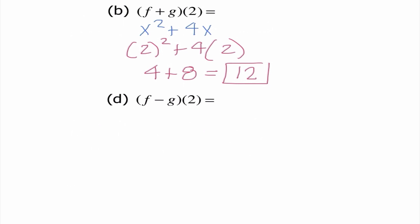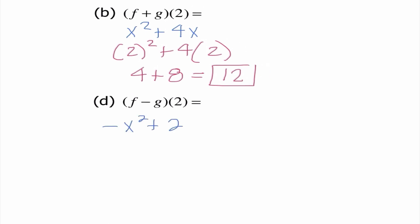For d, it's telling me to do f minus g again, but this time of 2. Just like on problem b, I could do f of 2 minus g of 2, but I'm going to use what we just found in part c. We determined it was negative x squared plus 2, so I substitute 2 in for x. The opposite of 2 squared is negative 4 plus 2, which is negative 2.